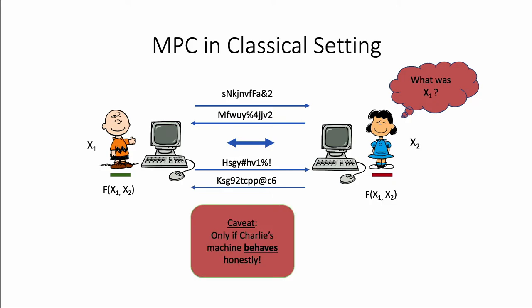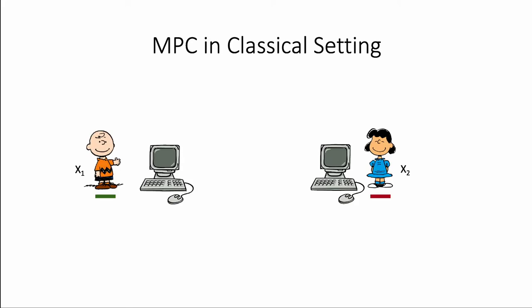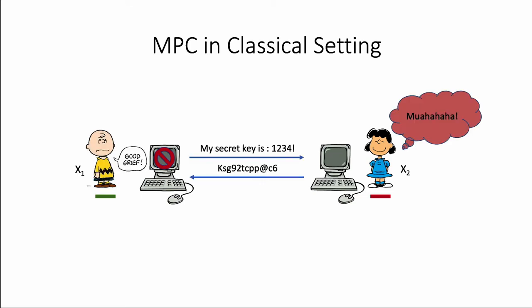It is important to note that the security guarantee crucially relies on the assumption that the honest parties execute the protocol honestly. That is, Charlie's computer has the honest implementation of the protocol. But what if this assumption is not valid? It is possible that the party's implementation is tampered by the adversary. So you have Lucy, who is corrupt, and Charlie, who is honest, but now Charlie's machine is tampered. In this case, instead of sending the message prescribed by the protocol, a tampered implementation can just output some secrets, and so there is no privacy.